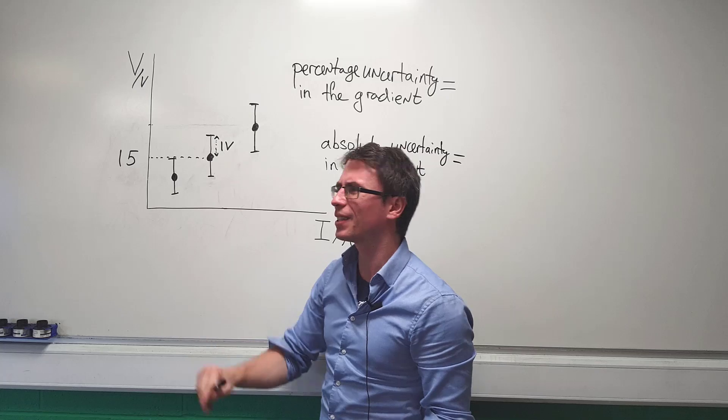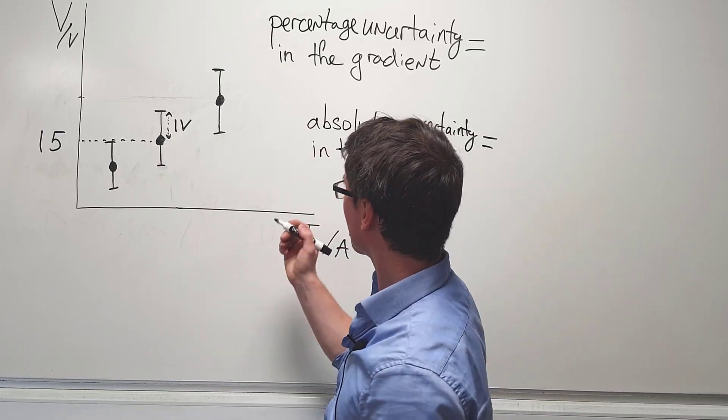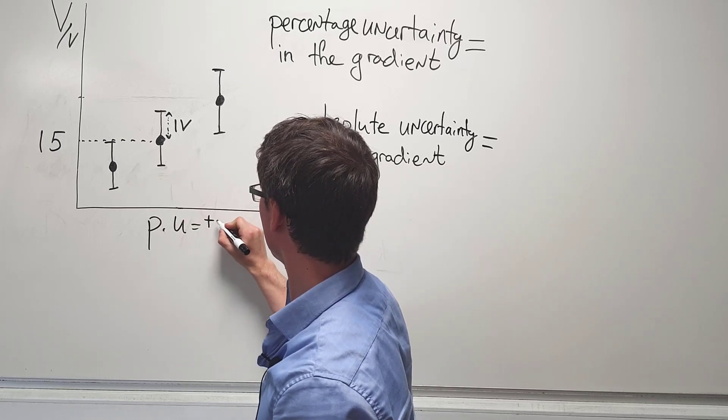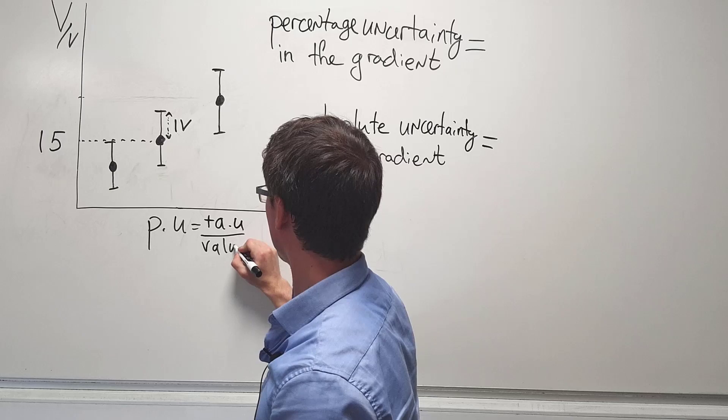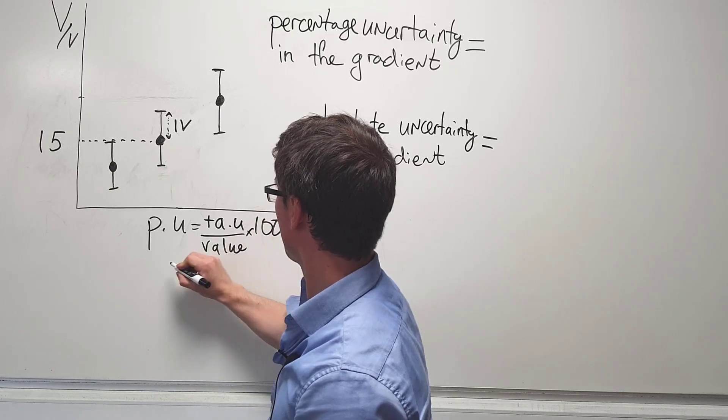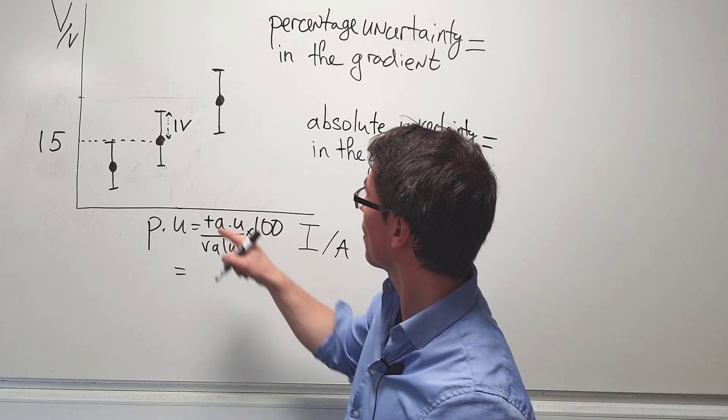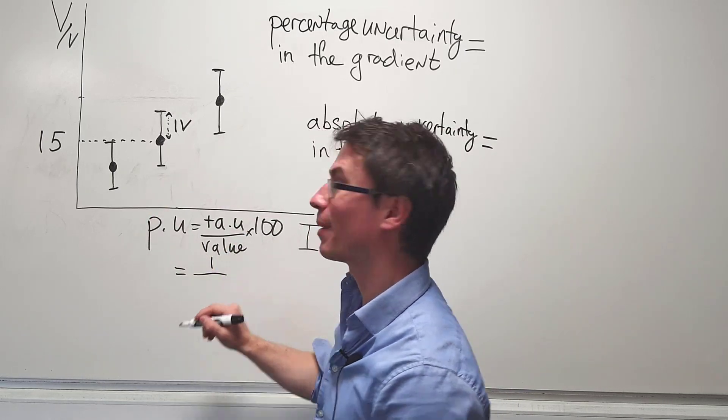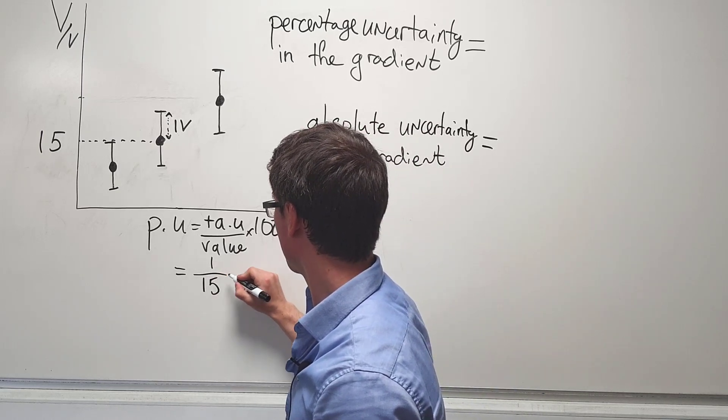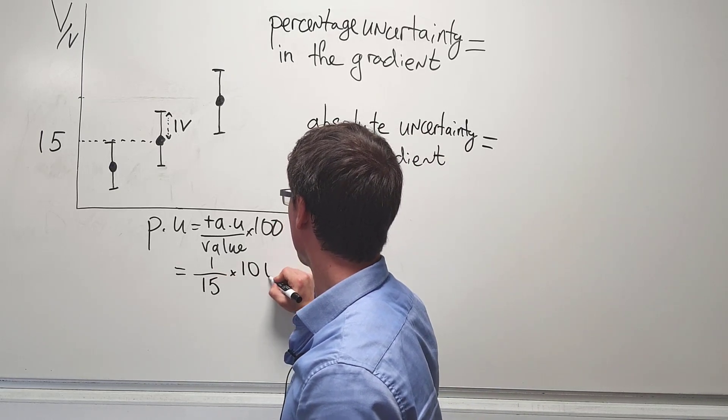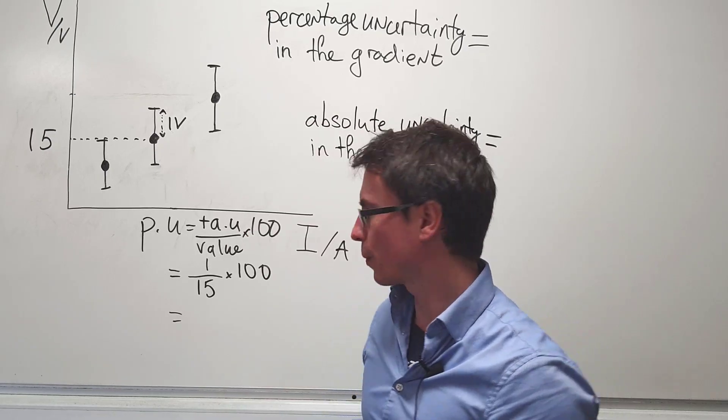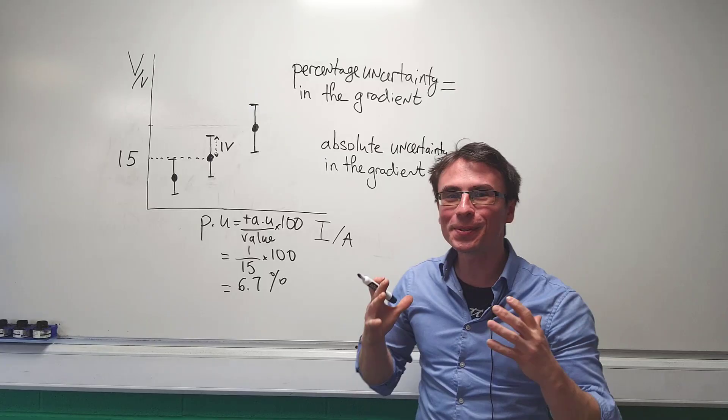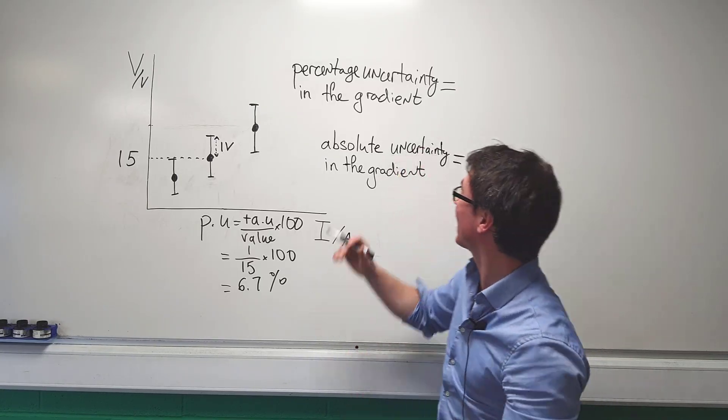What is the percentage uncertainty in this point? We could calculate that relatively easily. All we need to do is plus or minus our absolute uncertainty divided by the value times 100. Now our absolute uncertainty will just be 1, so that's going to be 1 volt divided by our value which is 15 volts times 100, which is around 6.7%.